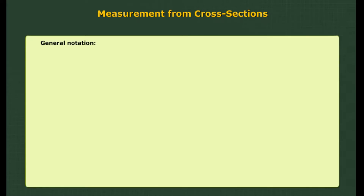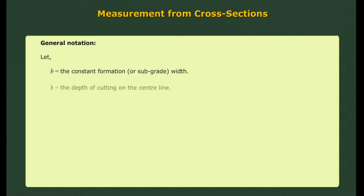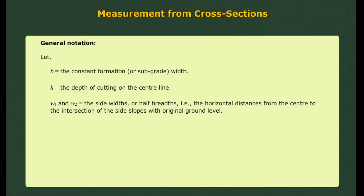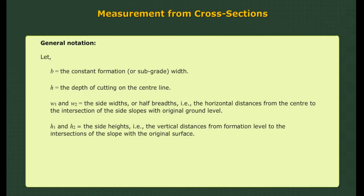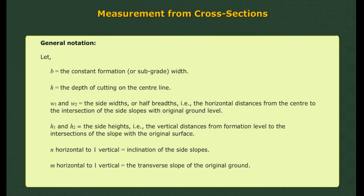General notation: Let B equal the constant formation or subgrade width; H be the depth of cutting on the centre line; W1 and W2 be the side widths or half breadths, i.e. the horizontal distances from the centre to the intersection of the side slopes with the original ground level; H1 and H2 the side heights, i.e. the vertical distances from formation level to the intersections of the slope with the original surface; N horizontal to 1 vertical the inclination of the side slopes; M horizontal to 1 vertical the transverse slope of the original ground; and A the area of the cross section.